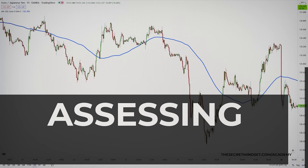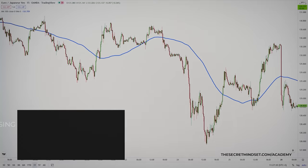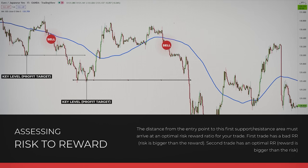Assessing the reward is more challenging. A common method is using the next key support or resistance area — the closest level that you believe could possibly hold price, resulting, in the worst case, in a bounce off that level threatening the viability of your trade. Very important: the distance from the entry point to the first support and resistance area must arrive at an optimal risk-to-reward ratio for your trade. If it doesn't offer that, you don't want to take that trade.